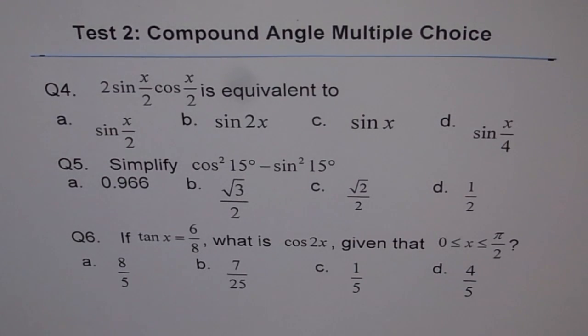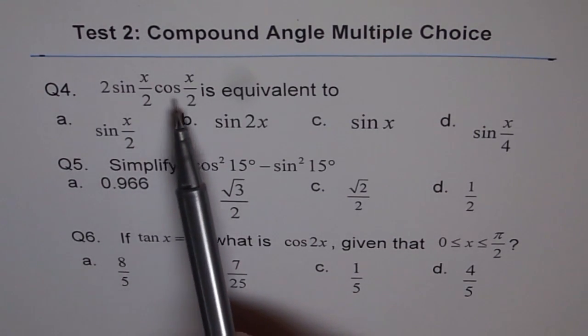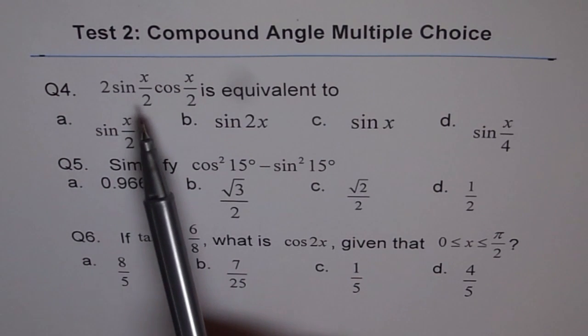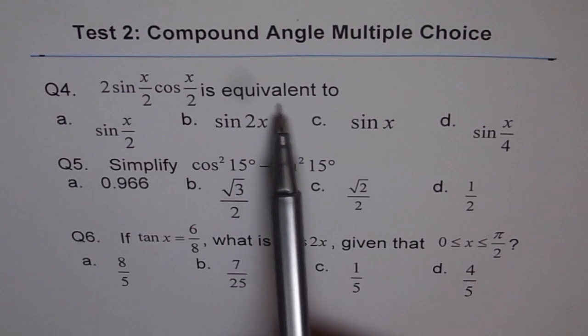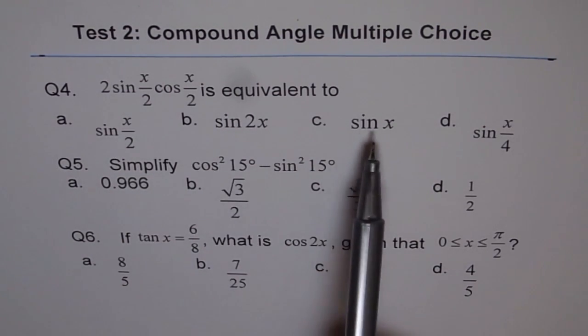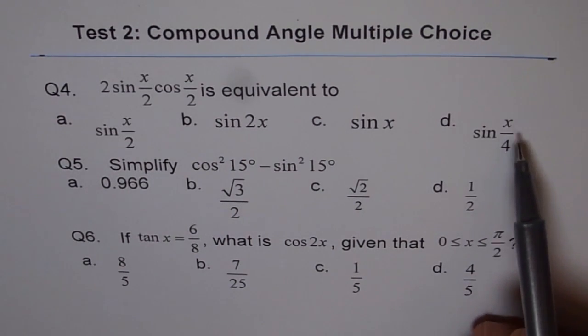Test 2: Compound Angle Multiple Choice Questions, Questions 4, 5, and 6. Question 4: 2sin(x/2)cos(x/2) is equivalent to: a) sin(x/2), b) sin(2x), c) sin(x), or d) sin(x/4).